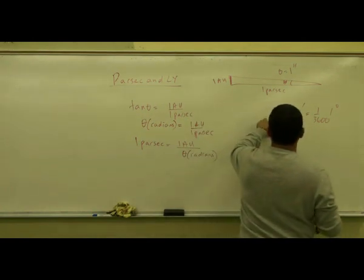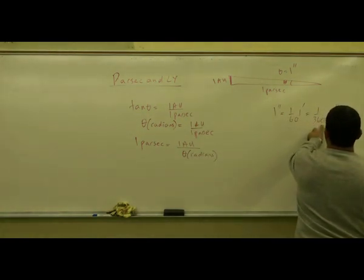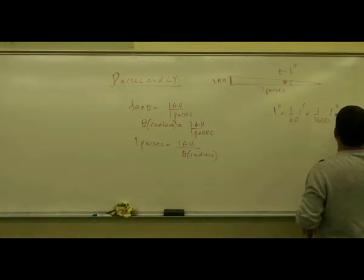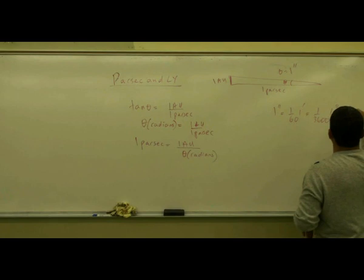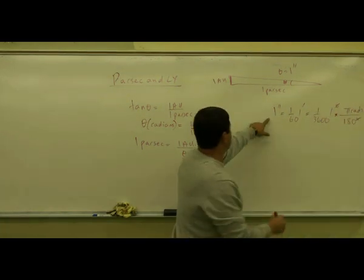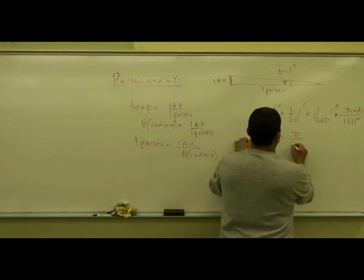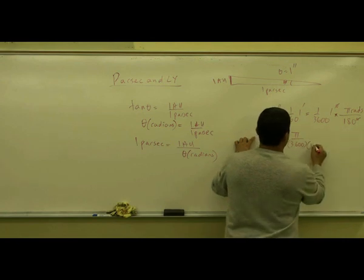So one arcsecond is how many radians? Well, I already told you one arcsecond is one 3600th of a degree. And then to change to radians, I say 180 degrees is pi radians, degrees cancel. So one arcsecond is equal to pi over 3600 times 180 radians.